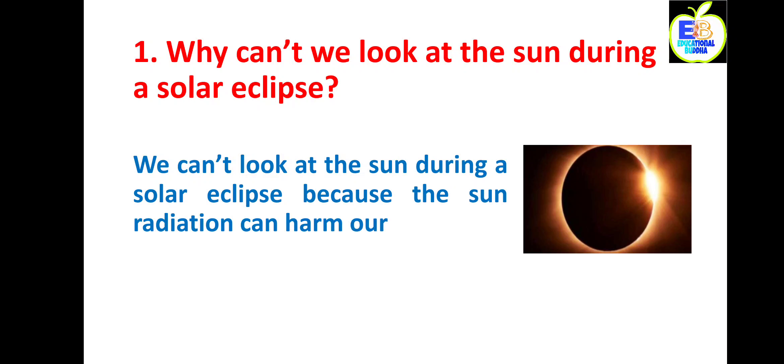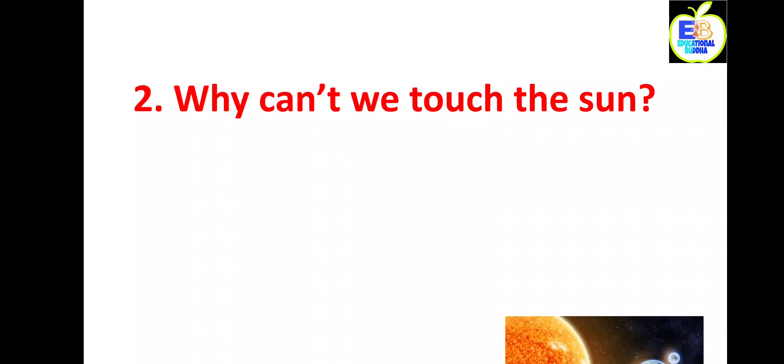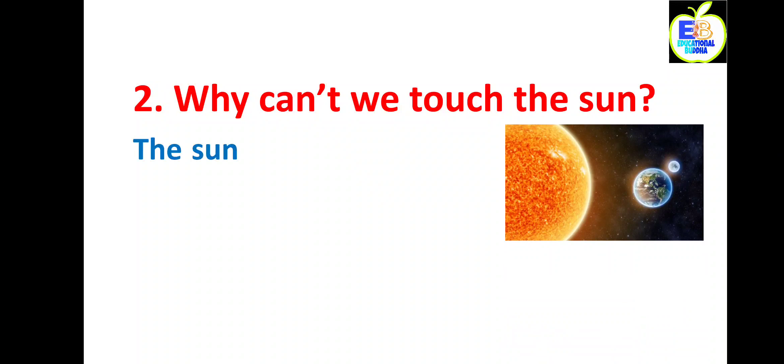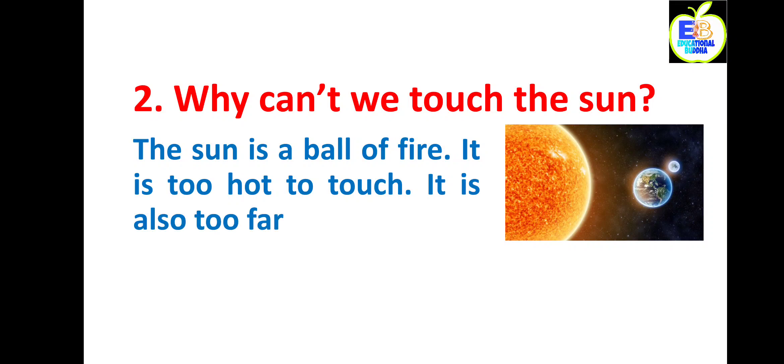Question number two: why cannot we touch the sun? The answer is: the sun is a ball of fire. It is too hot to touch. It is also too far to reach.